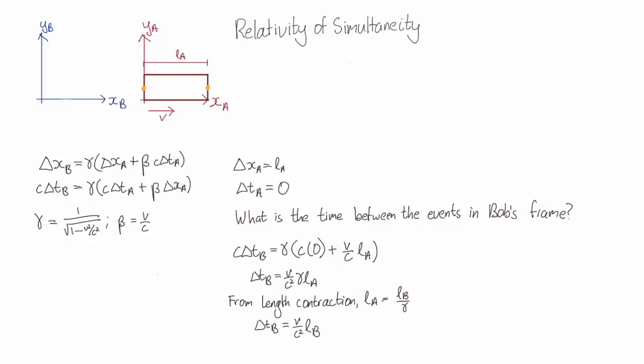So what does this depend on? Well, the first term is v over c squared. So in other words, in our everyday life, when velocity is much smaller than the speed of light, we don't notice this. But as the velocity gets larger, so does this effect.